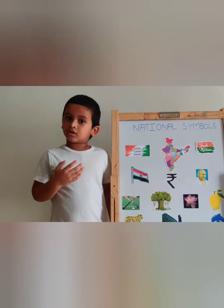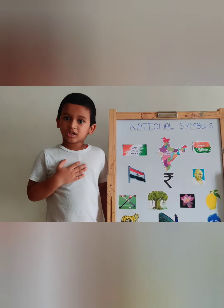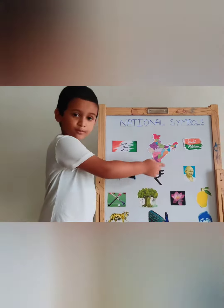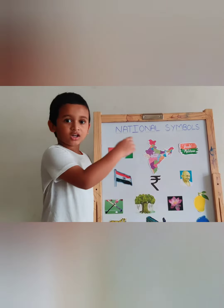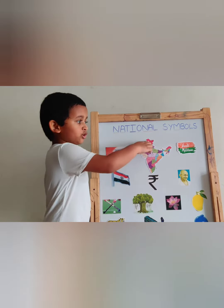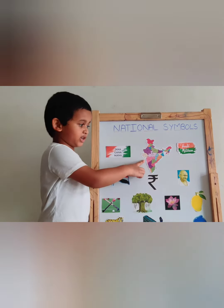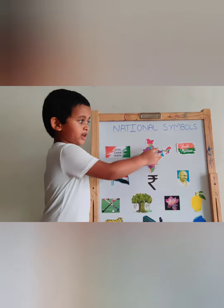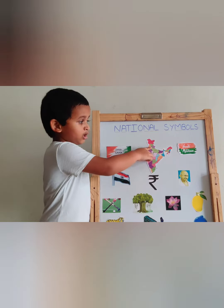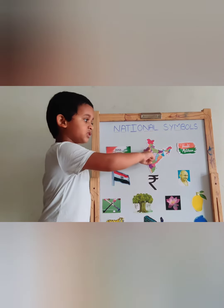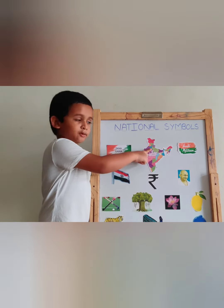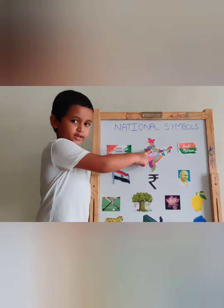India is our country. This is the map of our country. We have 28 states and Indian territories. New Delhi is the capital of India.